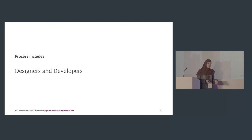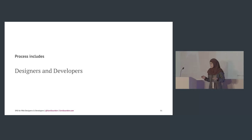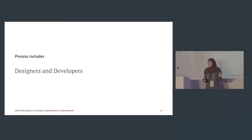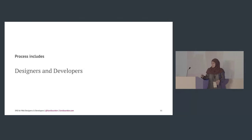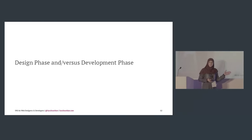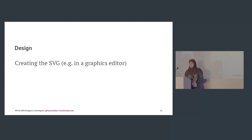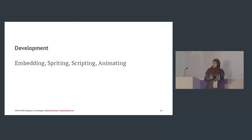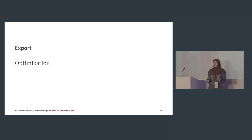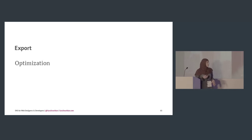There's been a lot of controversy about the thin line between designers and developers. I'm not going to talk about that — we'll be talking about a design phase versus a development phase. The design phase is where you create SVGs in a graphics editor. Development includes embedding, writing, scripting, and animating. In between is optimization, which is mostly part of the development phase.